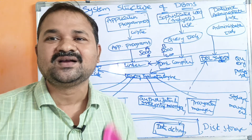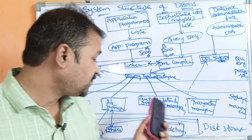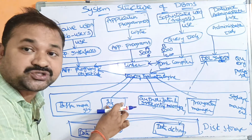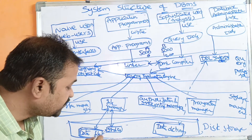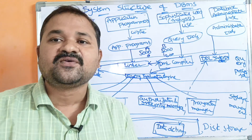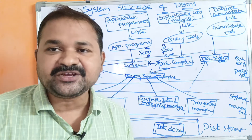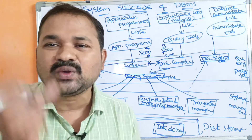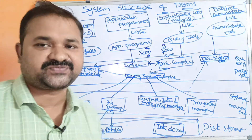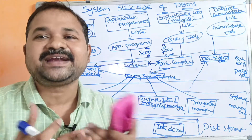Now let us see about the file manager. File manager means the file system, which is the duty of the operating system. The file manager allocates space for the files on the hard disk and stores the data files. It is the duty of the operating system to allocate space for the database. In order to store the database in a data file, the file manager is useful. Data files contain database information.